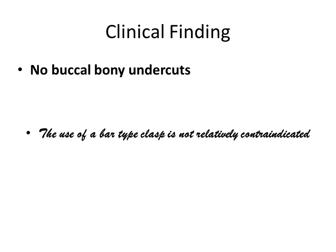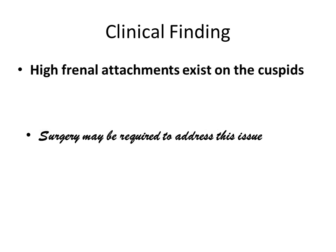There are no buccal bony undercuts. Bony undercuts affect the fit of the base and can prevent the use of infrabulgeclasps like I-bars and modified T's. However, we do see high frenal attachments on the cuspids — the attachment is up along the crest of the gingiva — and this will negatively impact our ability to use a bar clasp. We need to decide whether to have these attachments surgically altered or work around them.